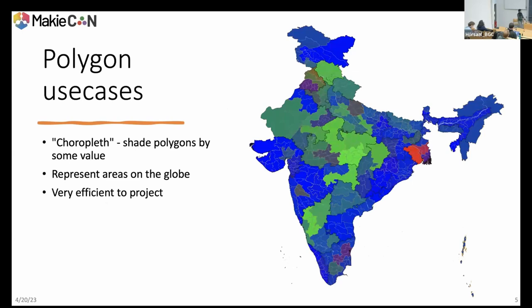Some use cases of polygons: this choropleth thing colors polygons by some value. You can represent areas on the globe, and it's efficient to project them in these projections because you're really only projecting a bunch of lines. Here you can actually see a fundamental map we made from a survey of citizens of India about what they thought the next five years would look like — whether they thought it was good (green), not sure (blue), or bad (red).